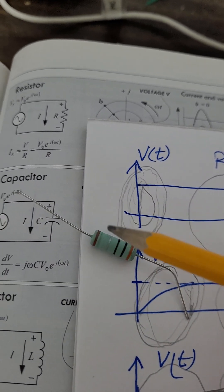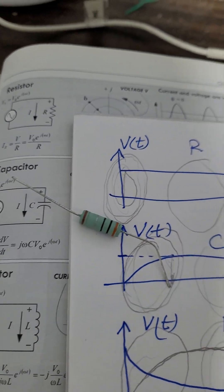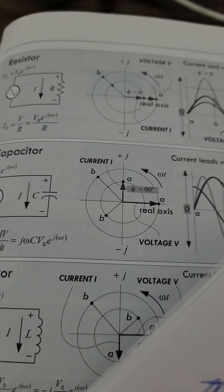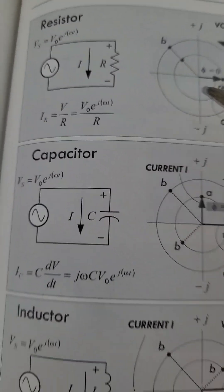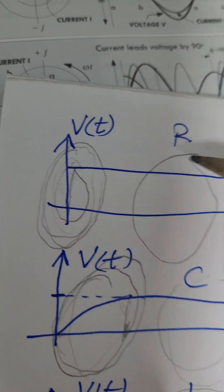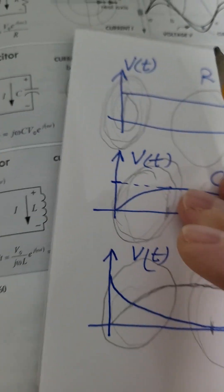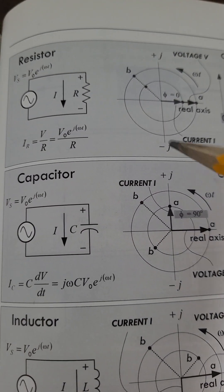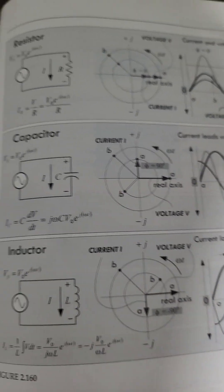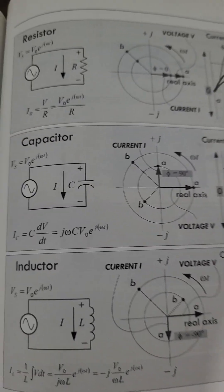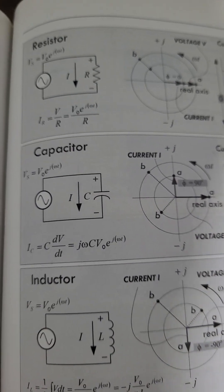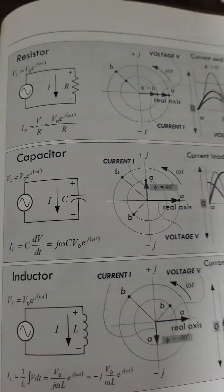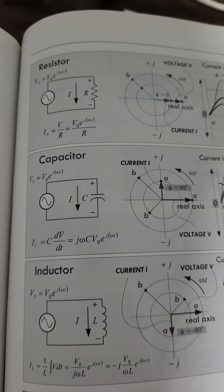When you let high-frequency signals go through a resistor, the parasitic inductor and capacitor inside become visible. I hope this has given you an idea of the meaning of time constant, transient analysis, steady-state regions, and how these relate to designing circuits with these elements.